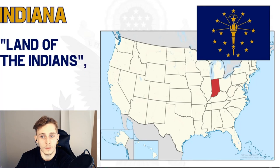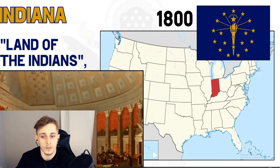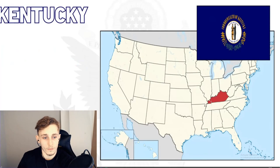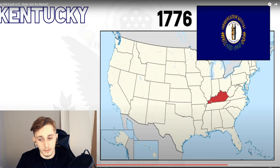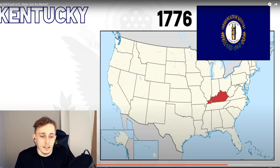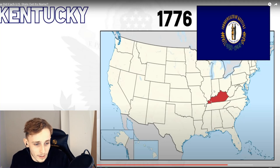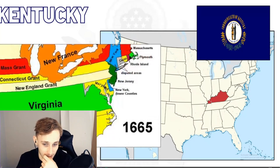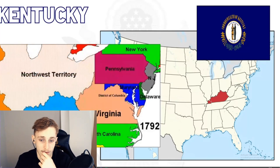Indiana's name is simple — it means 'land of Indians' or 'Indian land.' When in 1800 the US Congress divided the Northwest Territory, it named the western section the Indiana Territory, perhaps to differentiate it from the east where further European colonization had taken place. Moving to Kentucky — I get completely sidetracked thinking about KFC being from Kentucky, and how it became the most famous fried chicken. Kentucky was named for the Kentucky River, with the name's origin uncertain but probably based on an Iroquois word meaning 'on the meadow.'